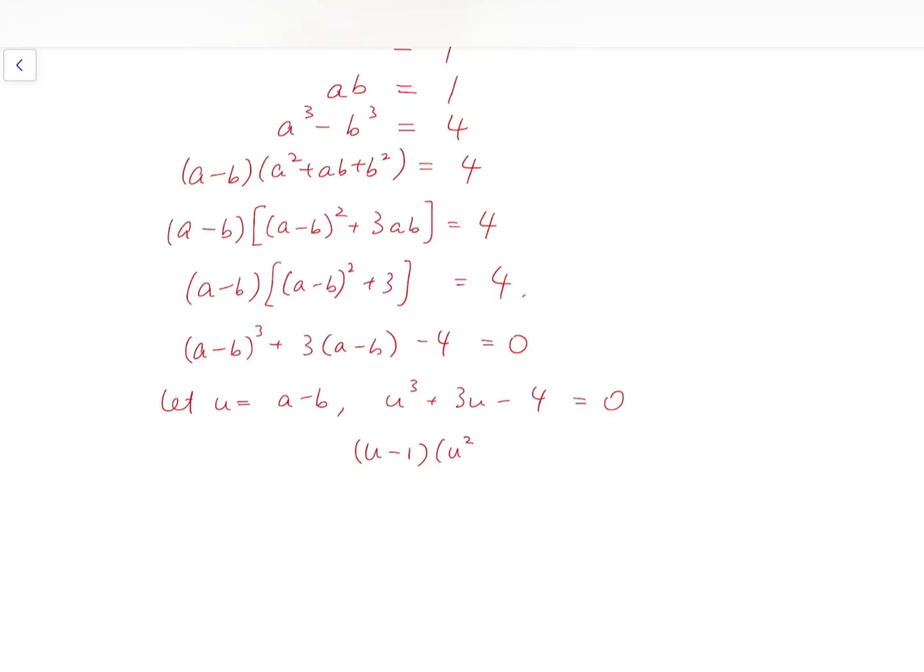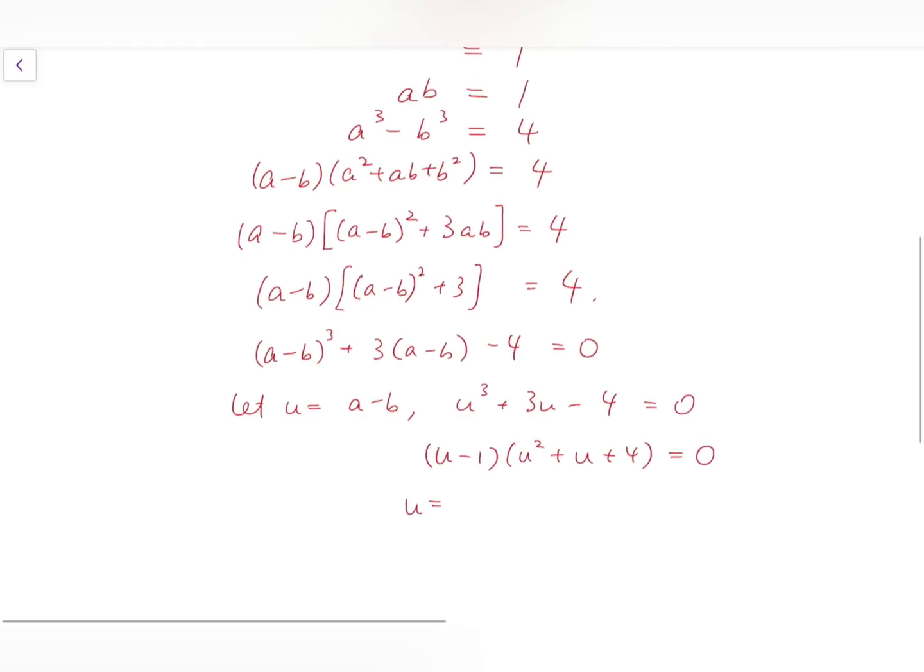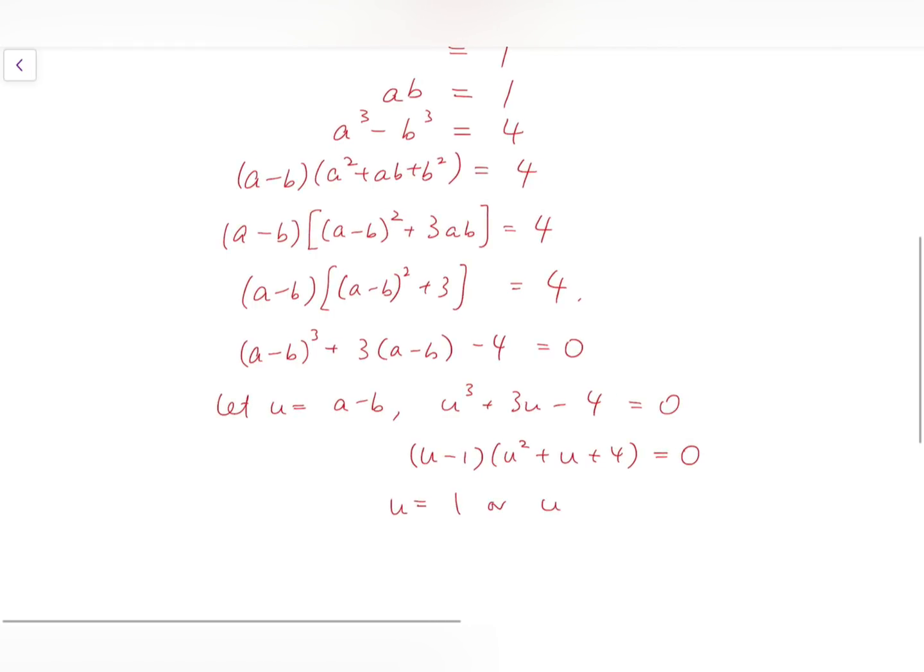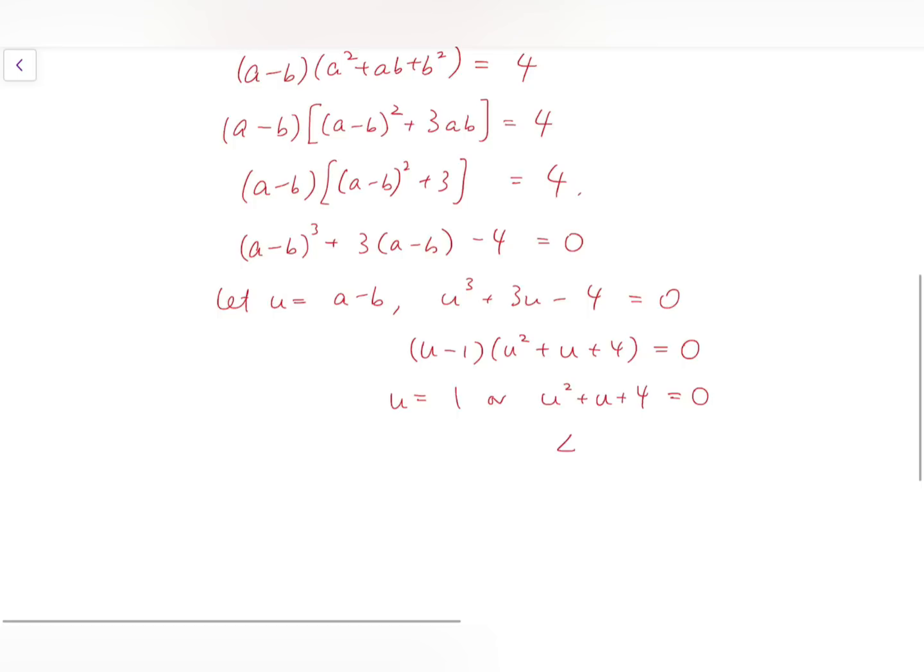Then dividing, you should get u squared plus u plus 4 as the quotient. So either u equals 1 or the other part equals 0. But for the second part, the discriminant is negative, so we can reject it. And that means this is the only possible solution for u, which is actually a minus b.